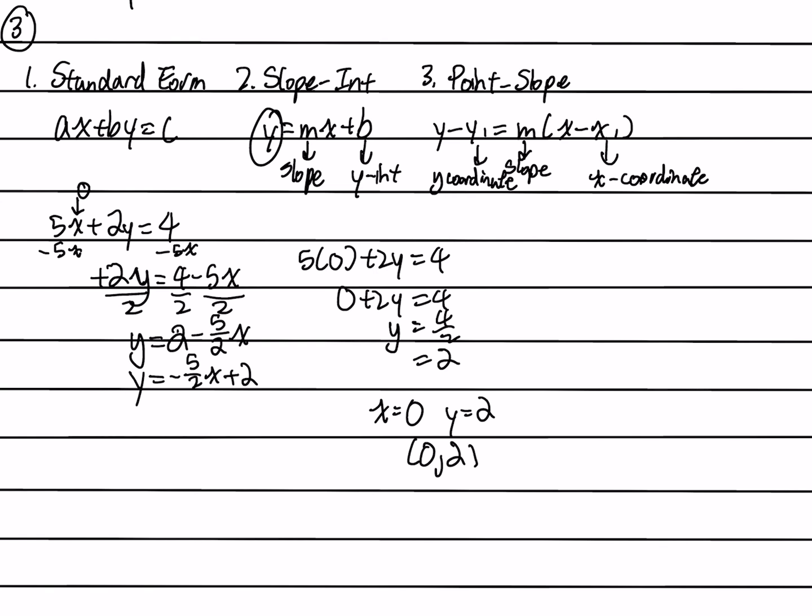Plugging that into point-slope form, we get y minus 2 equals m, which is negative 5 over 2, times x minus 0.